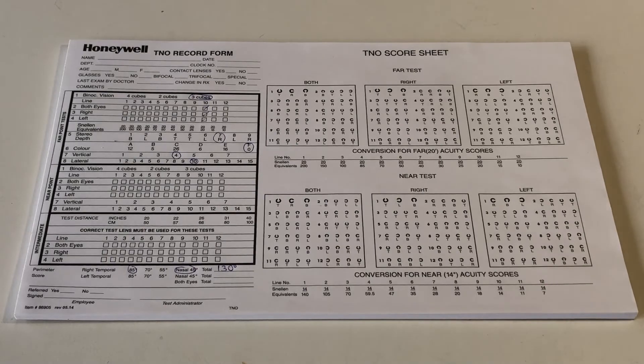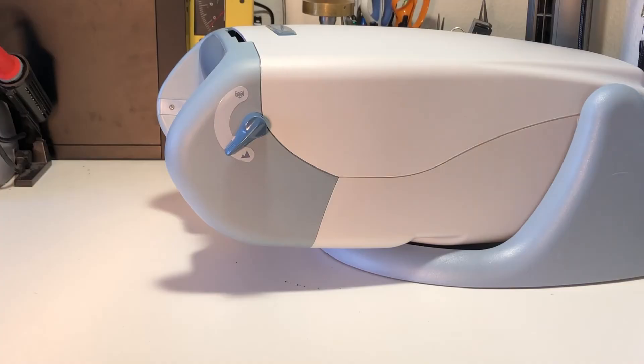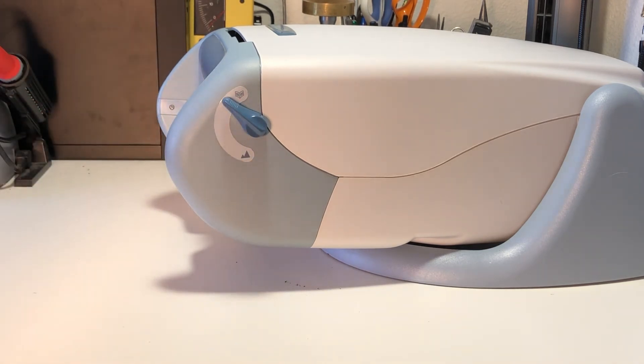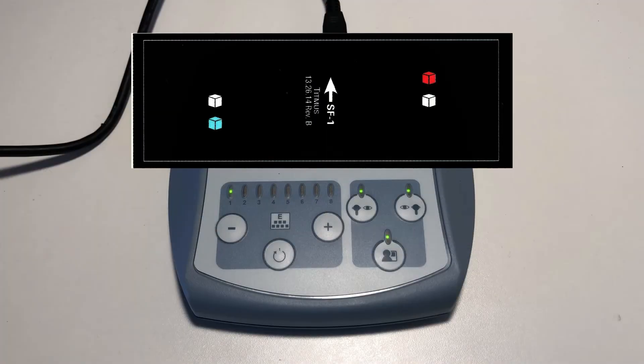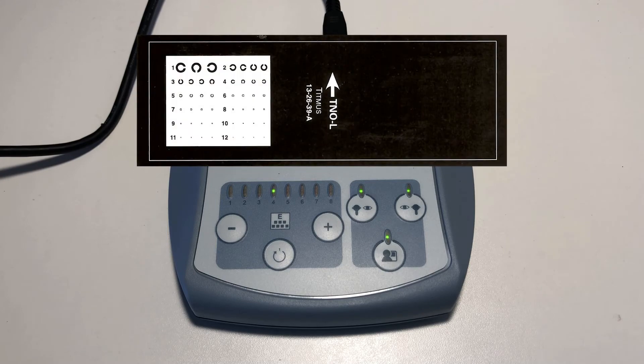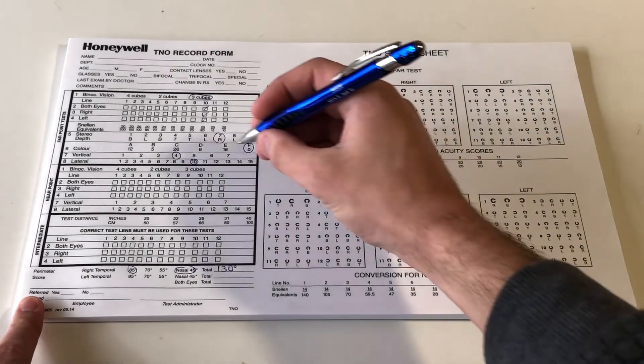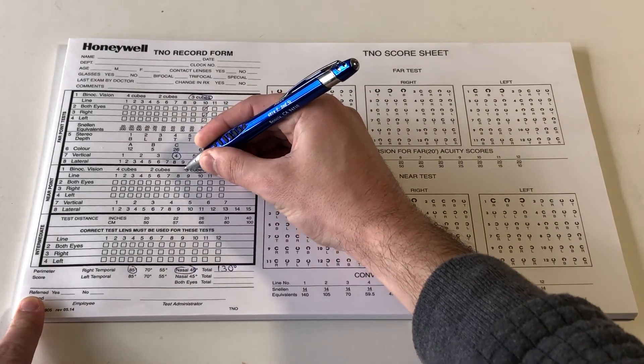Now we will move on to the near point portion of the test. Move the near far lever to the near position and repeat the procedure for slides 1, 2, 3, 4, 7, and 8. Record the results in the near point box of the record form.